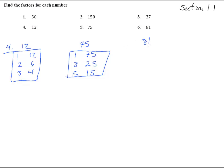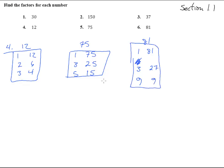And the last one: 81. We have 1 and 81. 2? Nope, 2 doesn't go into it. 3 — 3 into 81, yeah, I think it'll go. Take 3 into 81 and you get 27, and 9 and 9. So those are all the factors of 81.